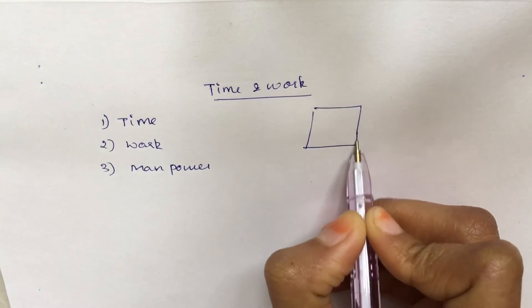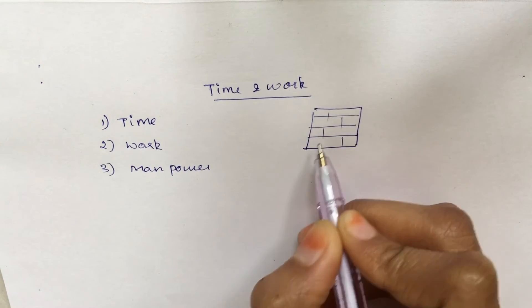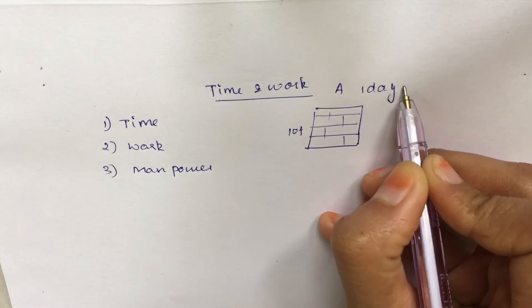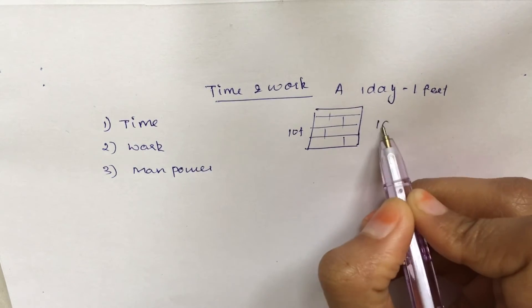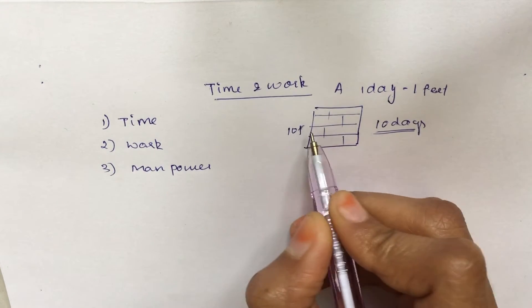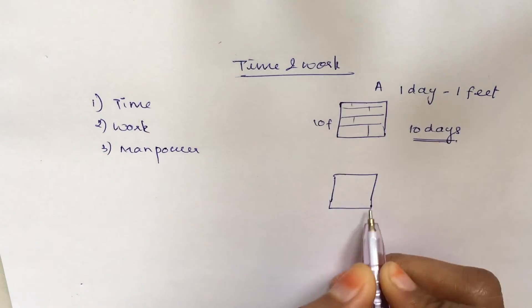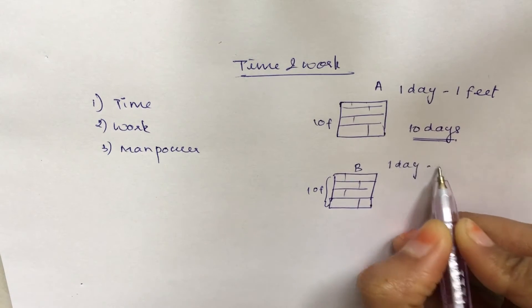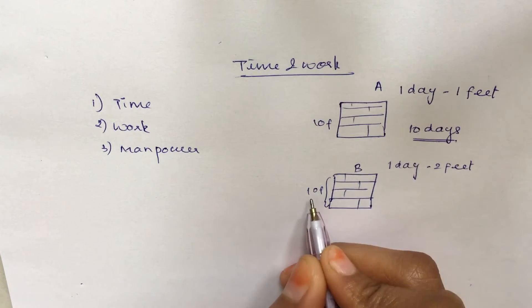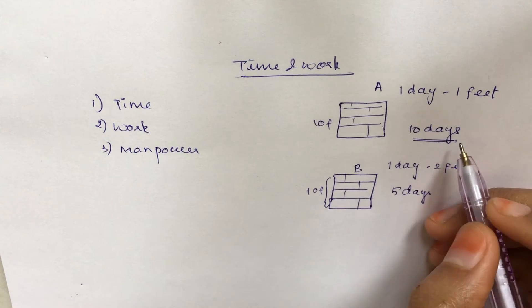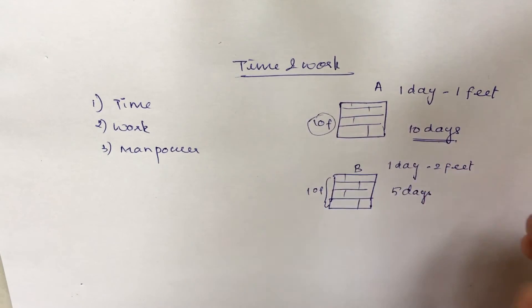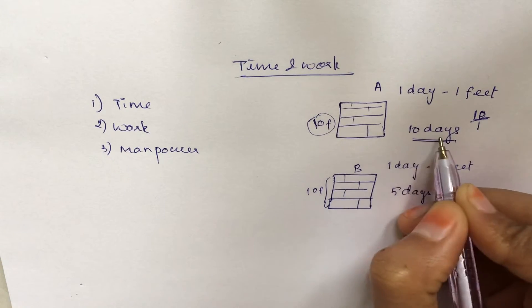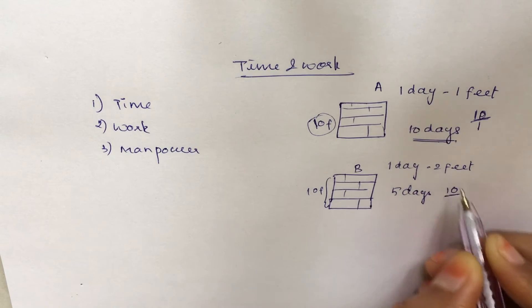For example, we are building a wall. This wall is 10 feet. If one person builds 1 foot per day, it is built in 10 days. So the total work is 10 feet divided by 1 day's work of 1 foot, giving 10 days. If 2 people work, total work is 10 feet divided by 2 feet per day, so it takes 5 days.